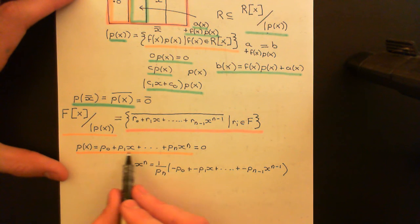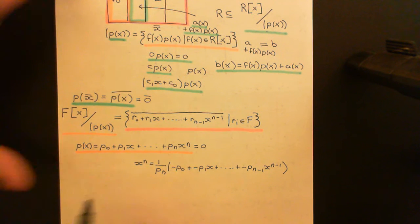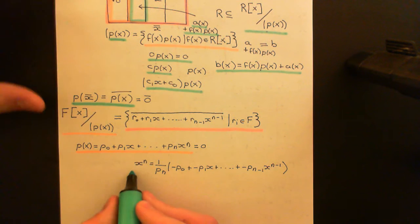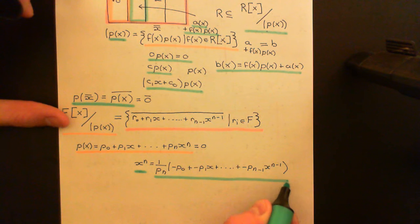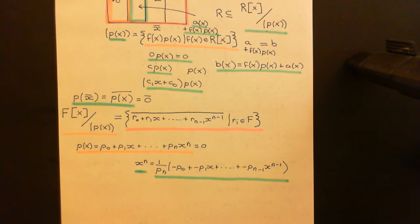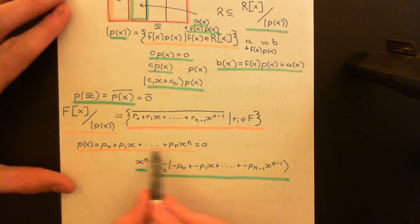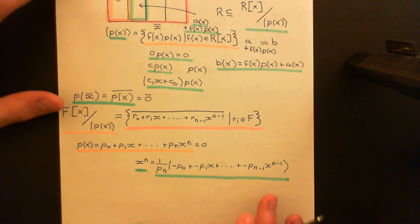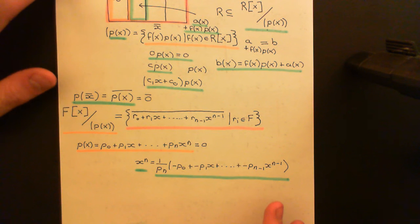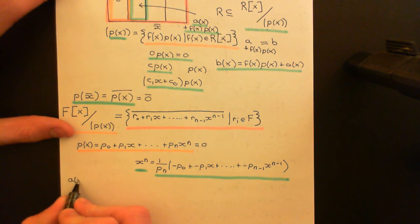The instant you say that P of X is equivalent to 0, you also imply that X to the N is going to be in the same coset as that lower-degree expression — i.e., they're equivalent to one another. This allows us to take any arbitrary polynomial A of X, which could be absolutely massive, as an element of the polynomial ring F[X].